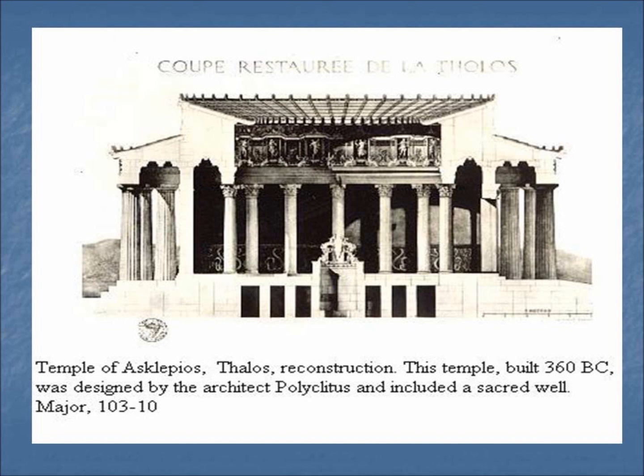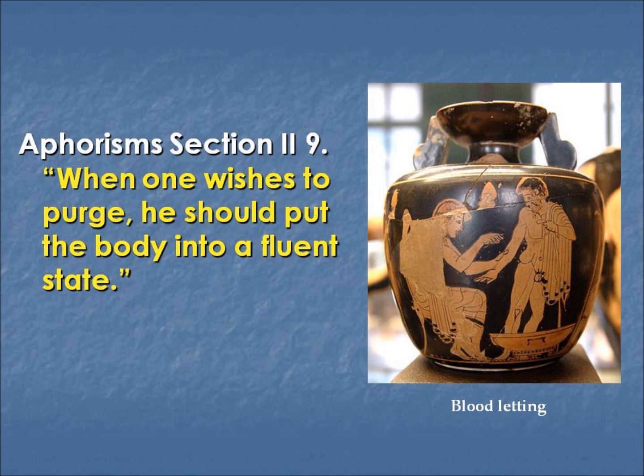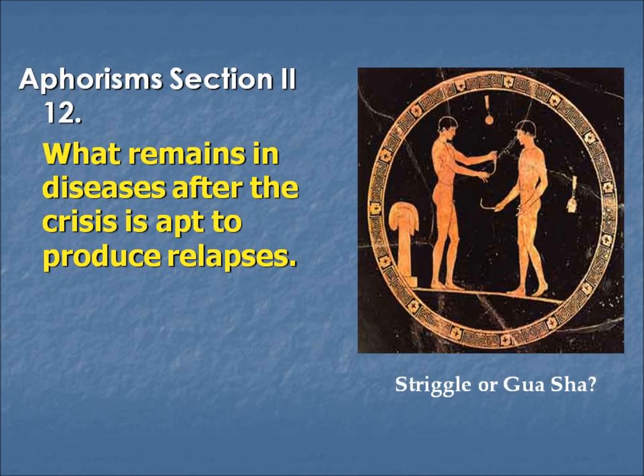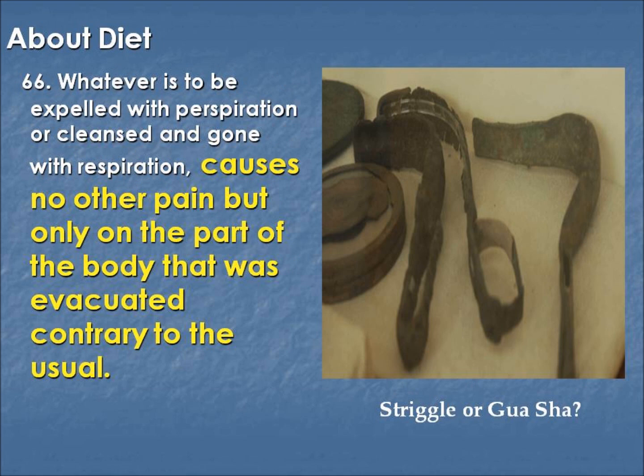The Aphorisms is considered the best of his works, written for experienced doctors. In section two we read: when one wishes to purge, he should put the body into a fluid state — this he would do with laxatives or emetics, or by bloodletting or by massage. In paragraph 12: what remains in diseases after the crisis is apt to produce relapses — meaning it's very important to remove all harmful material. In the book on Diet, paragraph 66: whatever is to be expelled with perspiration or cleansed with respiration causes no other pain but only to the part that was evacuated.